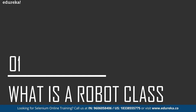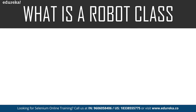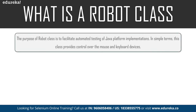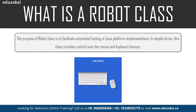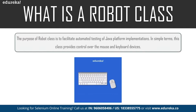Time plays a major role while testing and we need to make sure that we complete the desired task within a specific time. A Robot class is used to generate native system input events for the purpose of test automation, self-running demos, and other applications where control of the mouse and keyboard is needed. The primary purpose of this Robot class is to facilitate automation testing for the Java platform. It provides control over the mouse and keyboard devices and can handle pop-ups during execution.